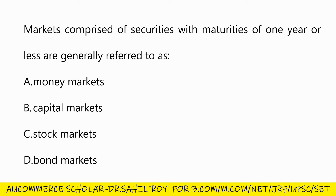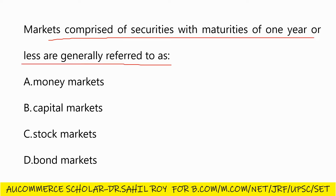Our next question: markets comprised of securities with maturities of one year or less are generally referred to as — money markets, capital market, stock market, or bond market. This is an easy question. The answer is Option A: money market. Where you raise money for less than one year, that is called the money market.